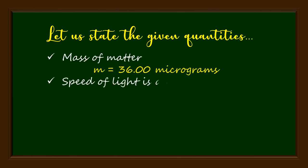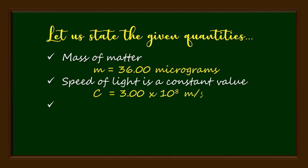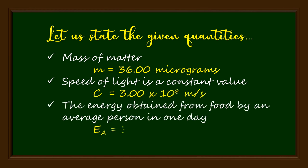Let us state the given quantities. Mass of matter m equals 36.00 micrograms. Speed of light is a constant value c equals 3.00 times 10 to the 8 meters per second. The energy obtained from food by an average person in one day, E_A, equals 3000 kilocalories.